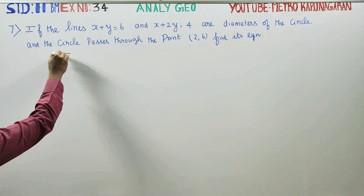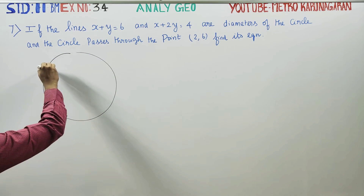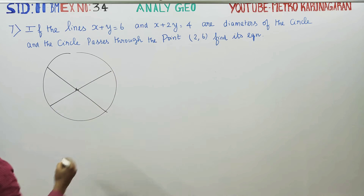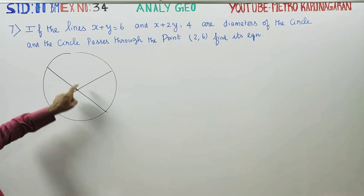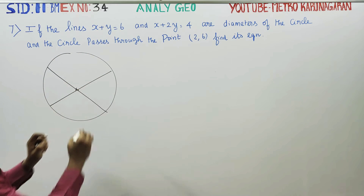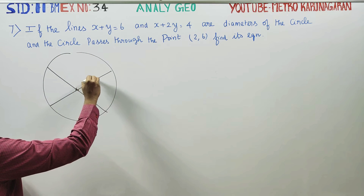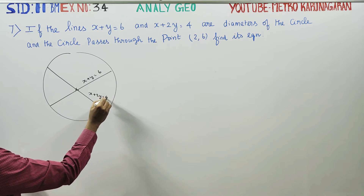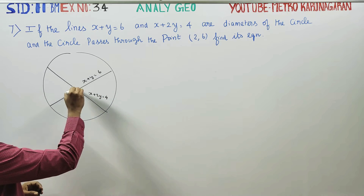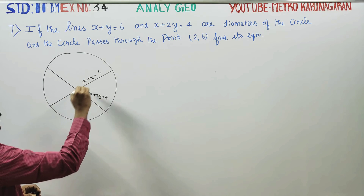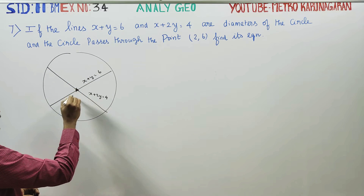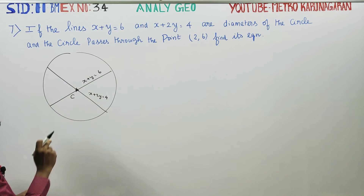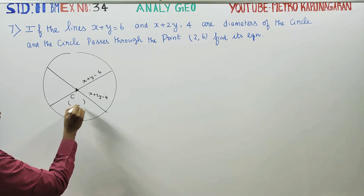This is a circle, and the circle has two diameters. The two diameters meet at the center. The two diameters are given by the equations: diameter 1 is x plus y equals 6, and diameter 2 is x plus 2y equals 4. Diameters pass through the center, so if we solve the two equations, we get the center.